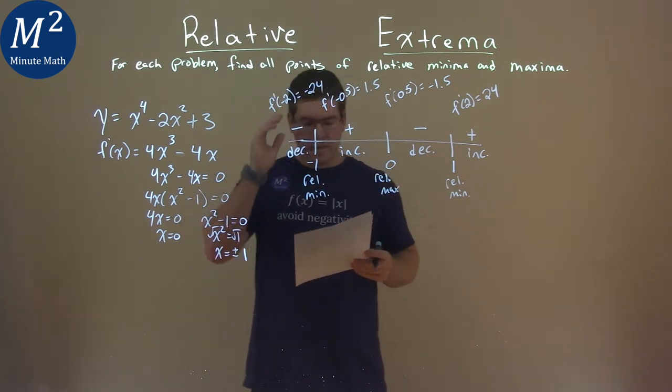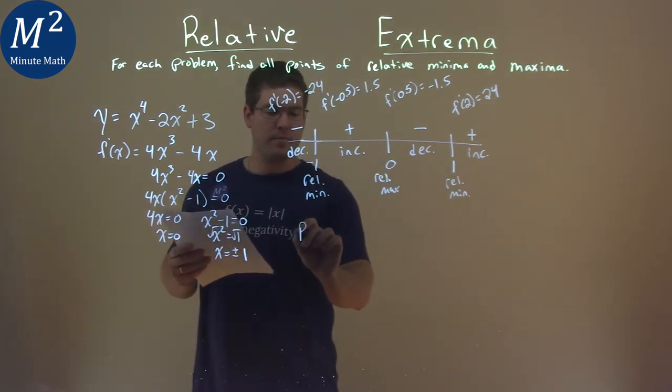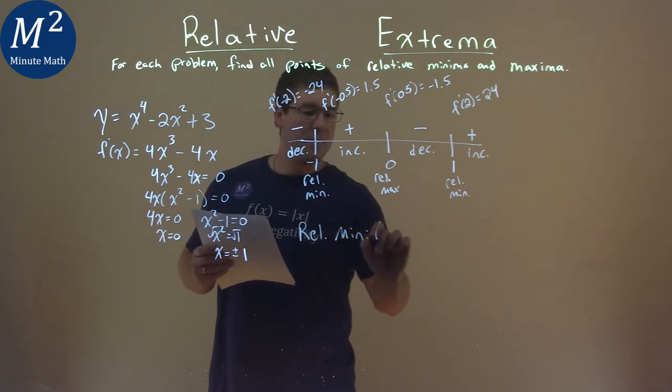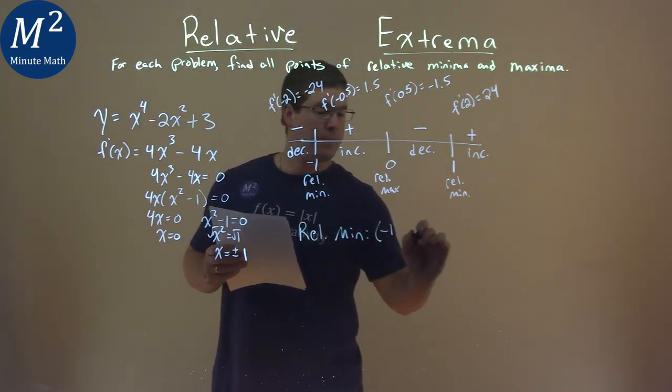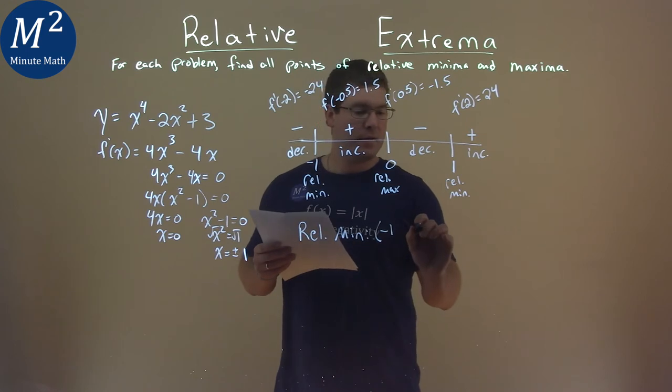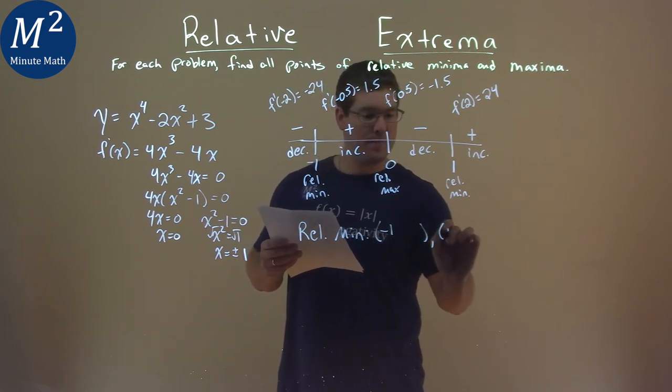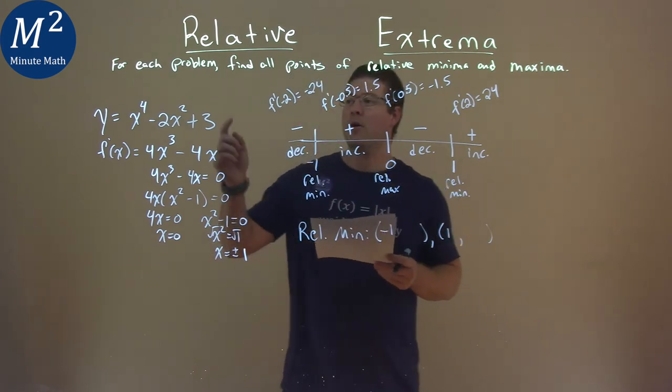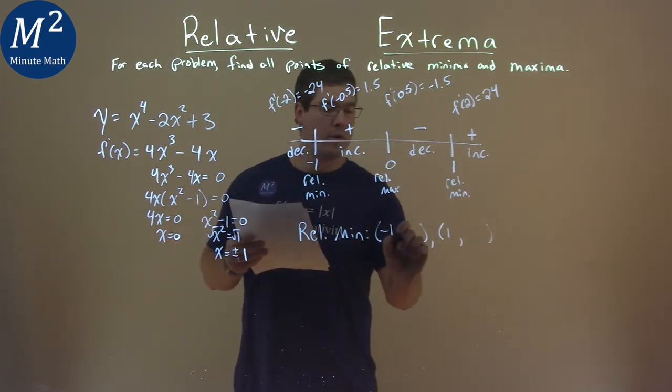So now we need to label these. So our relative minimums happen when x is a negative 1, and when x is a positive 1. And so we plug those values into our original function to get the y coordinates that go with them.